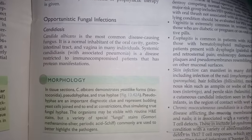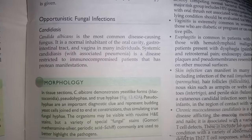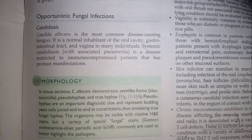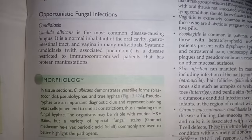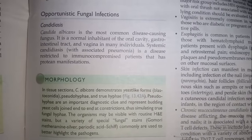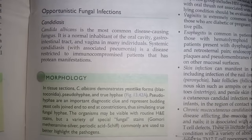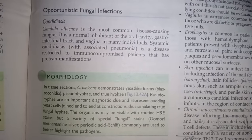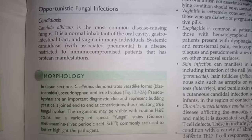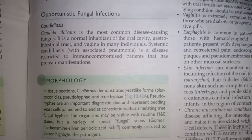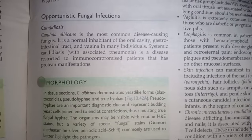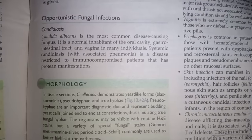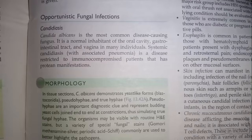Hi guys, welcome back to my YouTube channel Dream Max. Today we are talking about the topic of opportunistic fungal infection. Candida albicans is the most common disease-causing fungus. It is a normal inhabitant of the oral cavity and gastrointestinal tract, and it is common in many individuals. Systematic candidiasis with associated pneumonia is a disease restricted to immunocompromised patients, and it has protein manifestations.